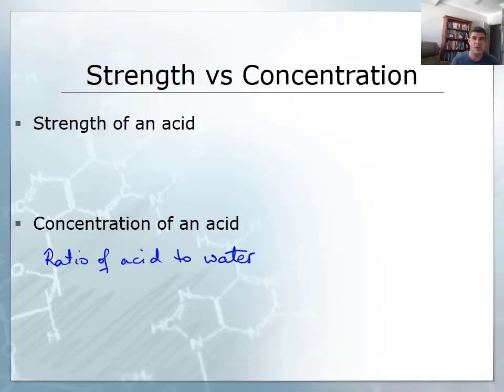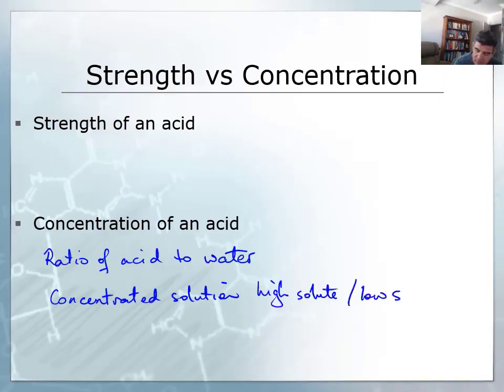As chemists, we need to realize that these common uses of these words are actually incorrect. When we're describing the ratio of acid to water in any solution, we're talking about its concentration. Therefore, we talk about a concentrated solution which is high solute, low solvent - in our example there would be lots of acid molecules or ions to low water.